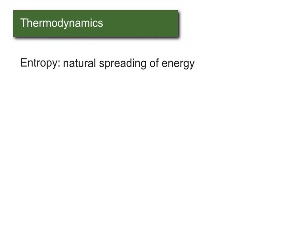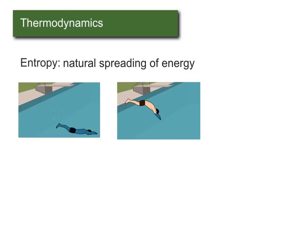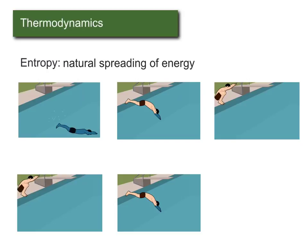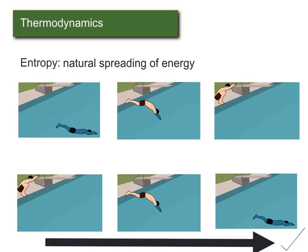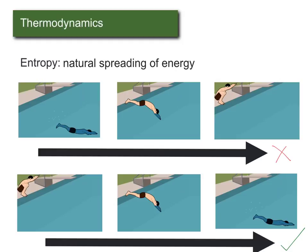So entropy is the reason that it looks funny if you were to see a swimmer rise back up out of the water versus diving in. Diving into the water and seeing the water splash up and then fall back down, that is a natural process. It's a natural spreading of energy. Whereas going the other direction would involve a lot of energy going back into the system, which is not going to happen spontaneously.